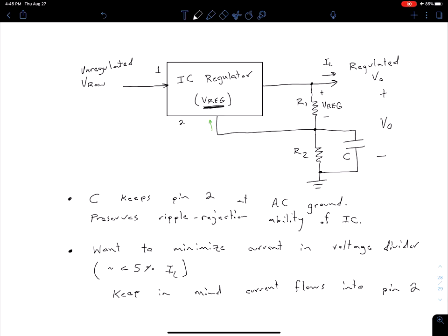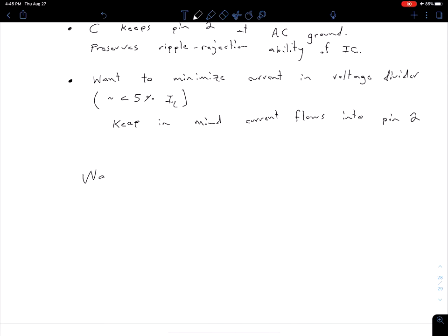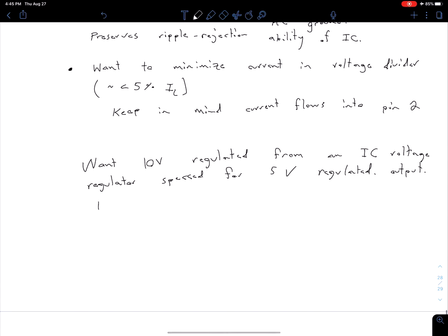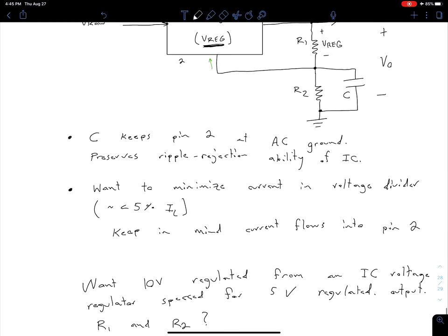With all that in mind, let's look at a simple example of how we would design this circuit. Say we want 10 volts regulated from an IC voltage regulator which is specced for 5 volts regulated output. We need to find values for R1 and R2.